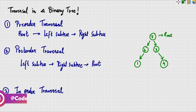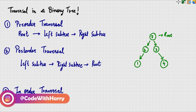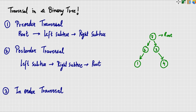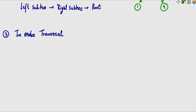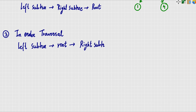Here is our in-order traversal. In-order is left, root, right. First write the left sub-tree, then the root, and then the right sub-tree.